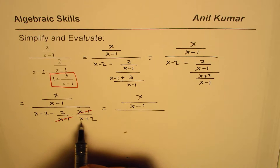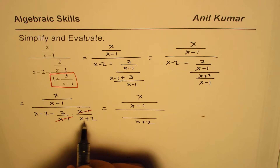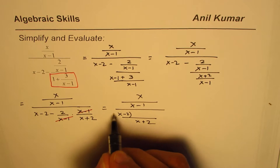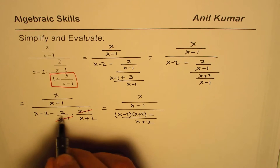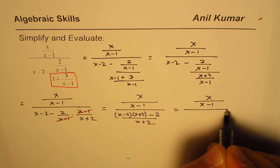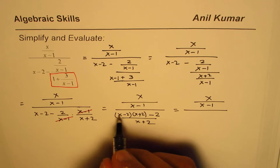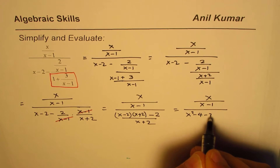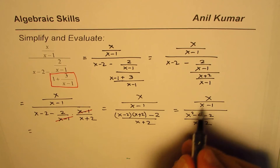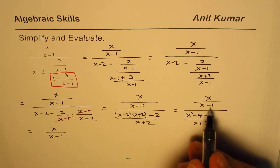We can take x plus 2 as a common denominator. We get x minus 2 times x plus 2 minus 2. This is difference times sum, so it is difference of squares: x squared minus 4 minus 2, divided by x plus 2. We can write this as x over x minus 1 times x plus 2 over x squared minus 4 minus 2.